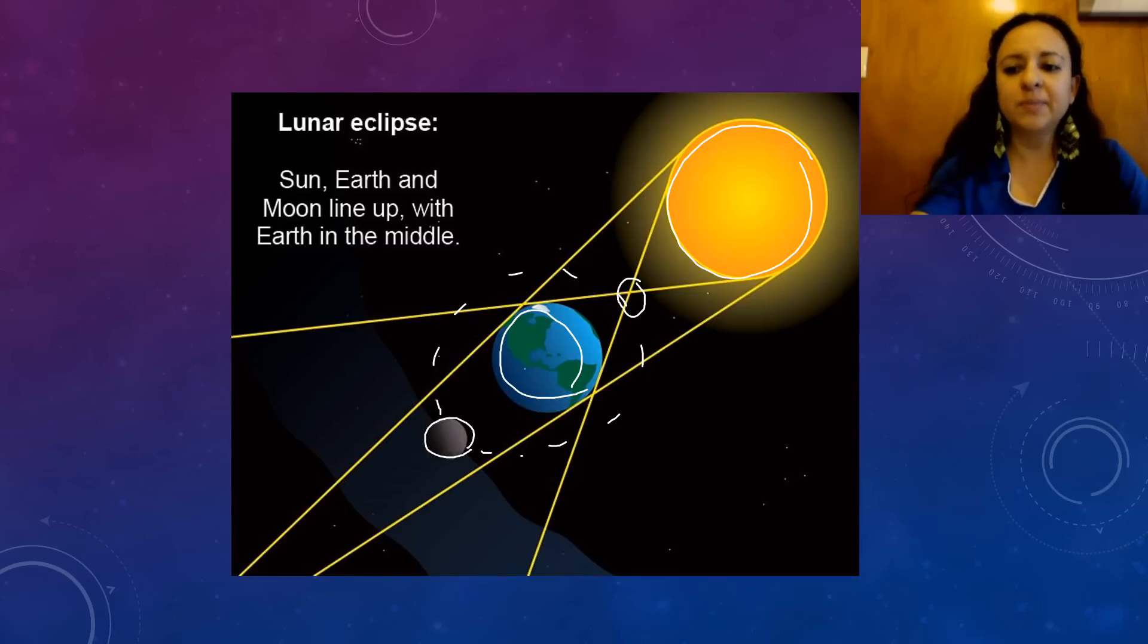So let's imagine that we're on the Earth again. We're looking at the moon, but instead of seeing the moon from a different angle, the Earth is casting a shadow on the moon. So we're going to see the lunar eclipse.